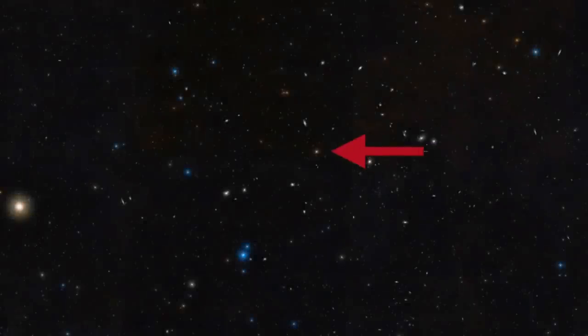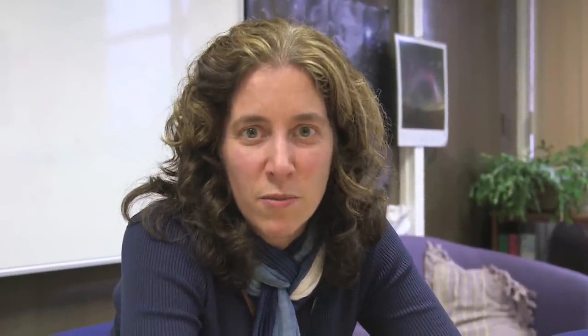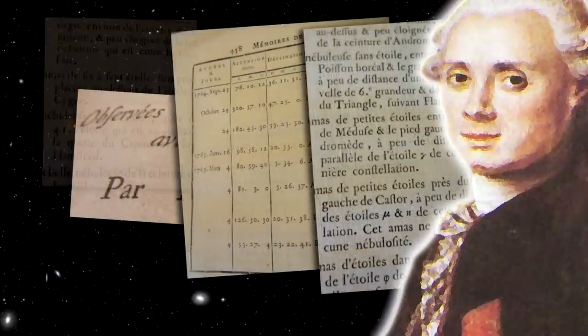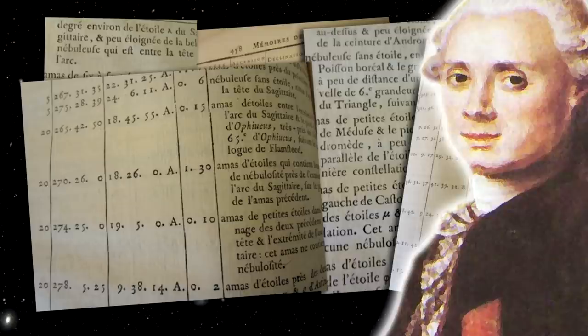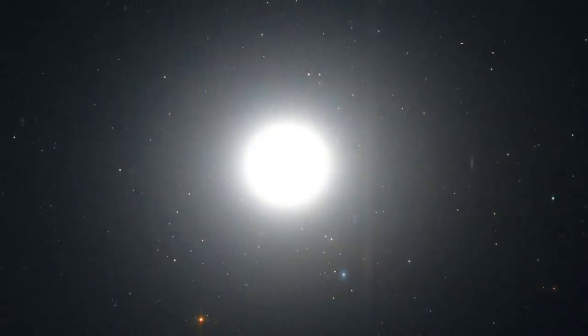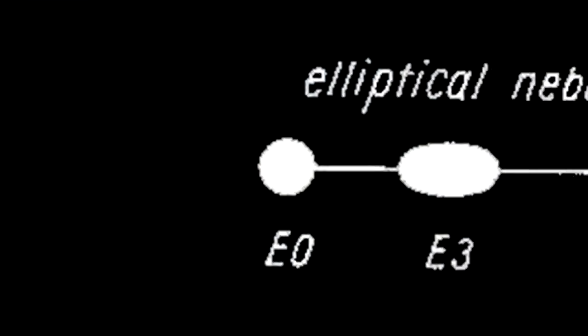Today we're on Messier 89, which is a galaxy in the Virgo cluster. It was discovered by Messier on one very productive night — he discovered eight galaxies in the Virgo cluster and a globular cluster, all on a single night. What's remarkable about it is that it's perfectly round, or it appears to be perfectly round on the sky. So it's the type of galaxy we call an E0, or an elliptical class 0 object.